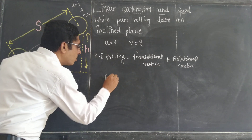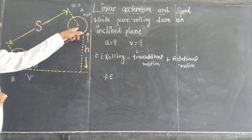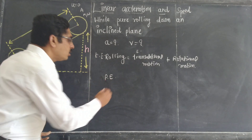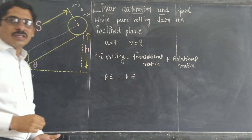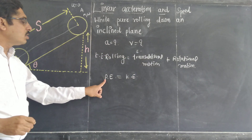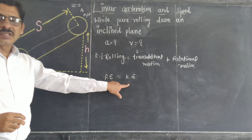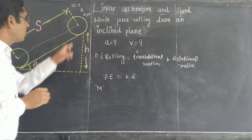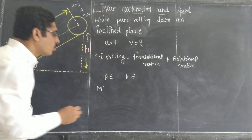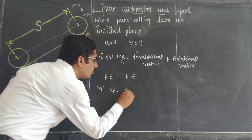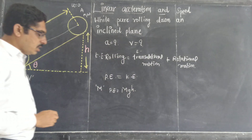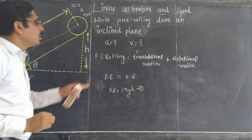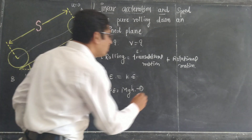It is totally potential energy at the top. As the sphere or body moves from the top point to the bottom point, the potential energy converts into kinetic energy. According to the law of conservation of energy, potential energy must be equal to kinetic energy. Suppose m is the mass of the body, so potential energy equals mgh.